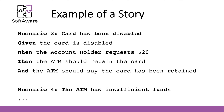Scenario number three is the case where the card has been disabled. Given the card is disabled, when the account holder requests $20, then the ATM should retain the card and should say that the card has been retained. Scenario number four: the ATM has insufficient funds. And we can go over all the distinct scenarios of a simple story and all the ways that this product can be used by users.